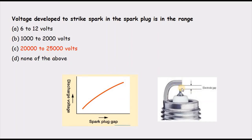The gap must be maintained at a higher value, from around 0.3 mm to 0.7 mm. To jump across such a gap, a high voltage of 20,000 to 25,000 volts is required. So the correct answer is C.